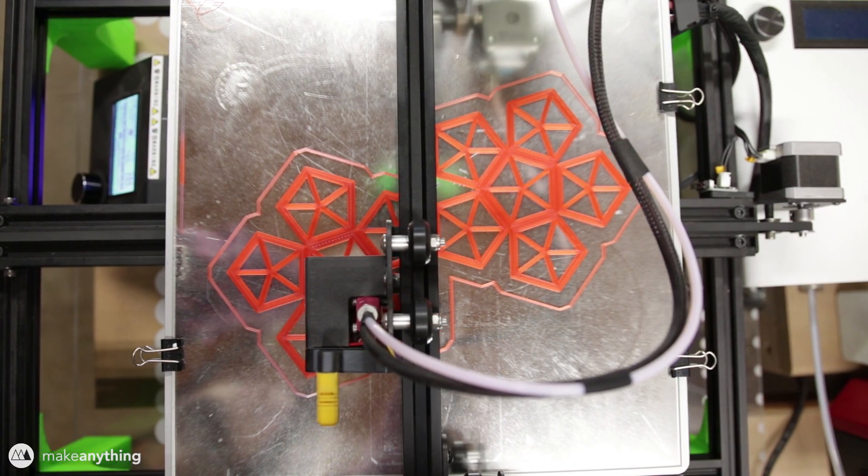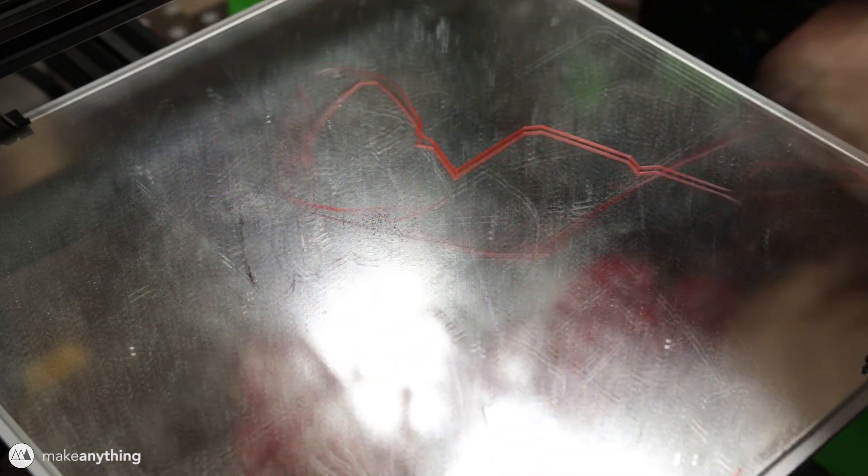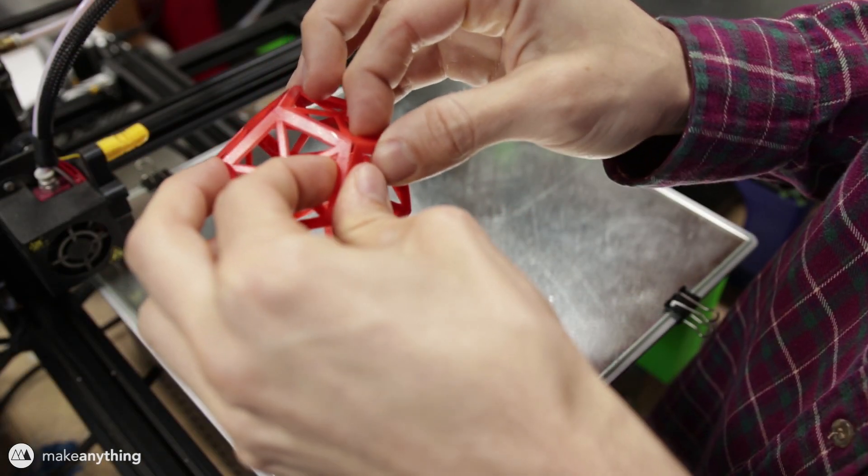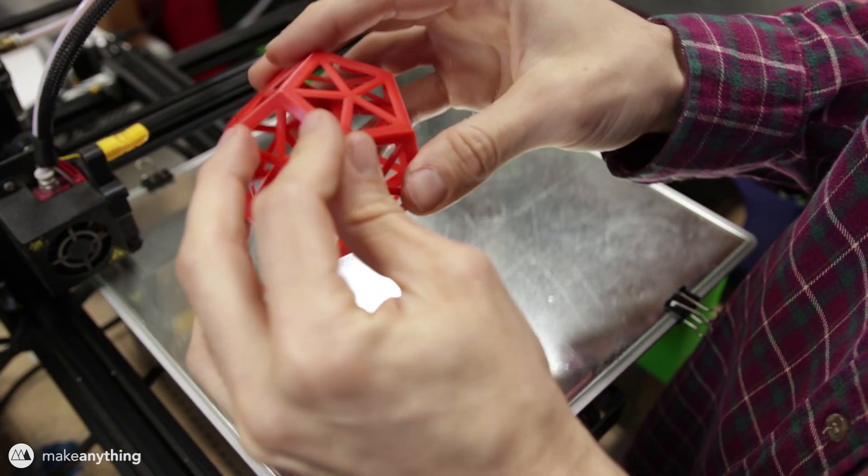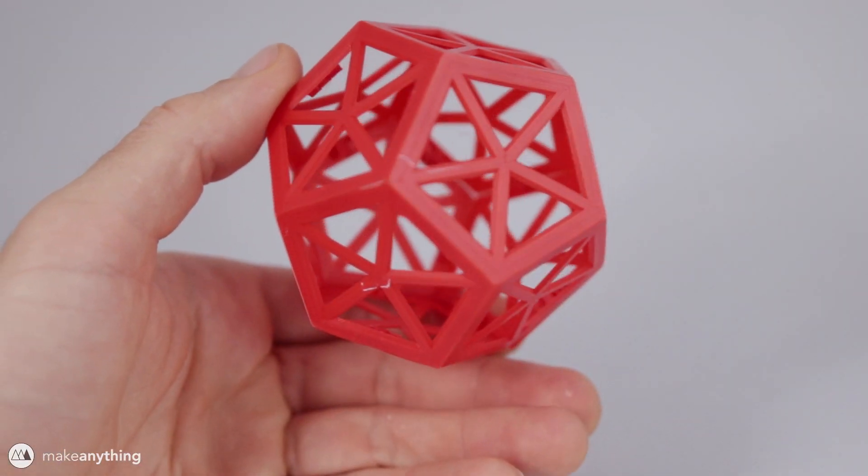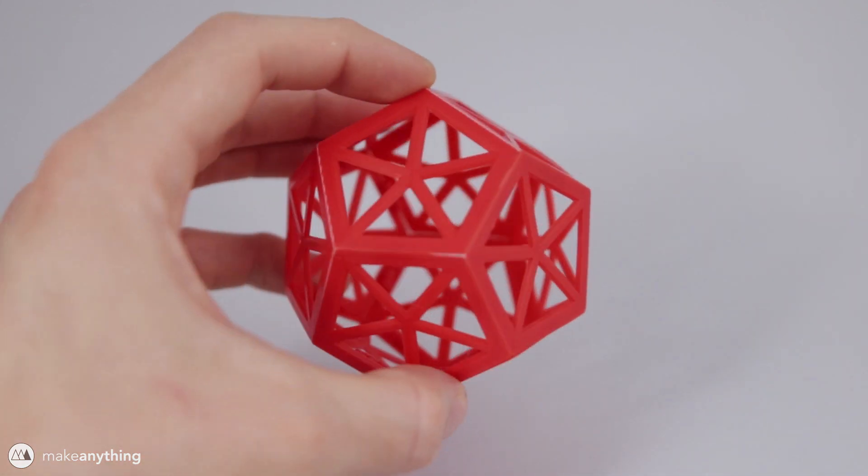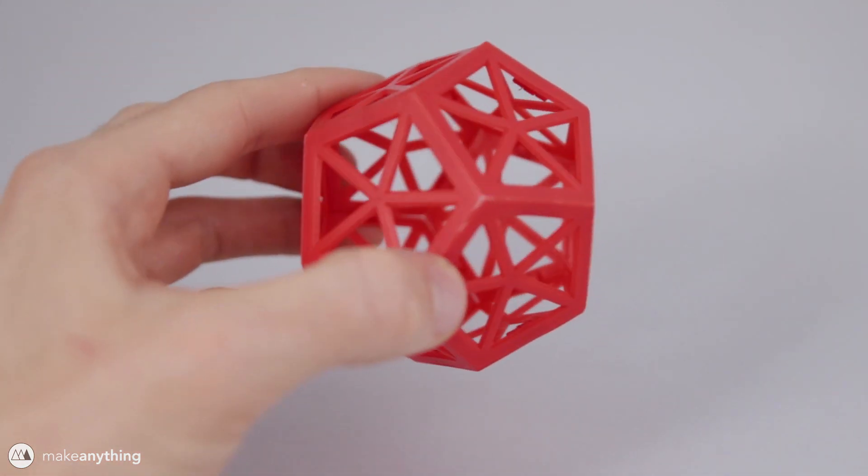Anyways here's that dodecahedron printing out and this is another one of those cool platonic solids. It's made up of 12 equal pentagonal faces. I cut these triangular holes in all the faces to give this model a kind of wireframe look. It saves material when printing and I also just think it looks really interesting.